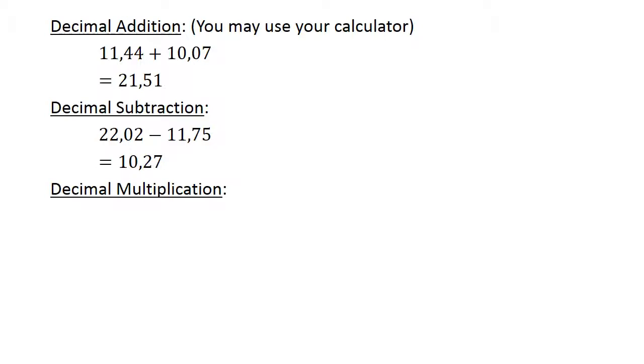Decimal multiplication. 0.25 times 0.18 equals 0.045.